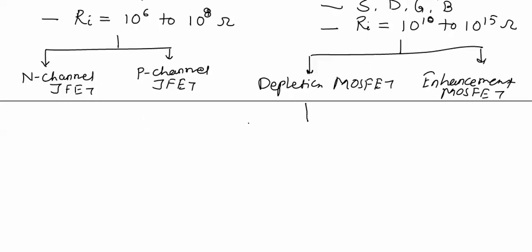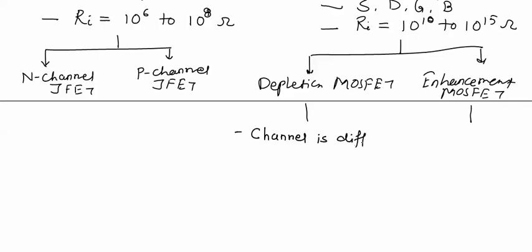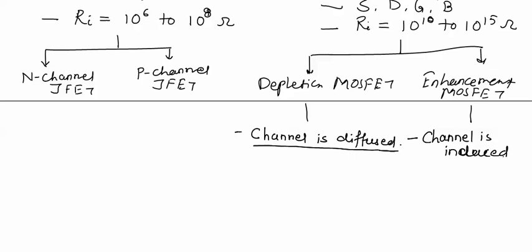The Depletion type MOSFET and Enhancement type MOSFET have a basic difference between them. In Depletion type MOSFET, the channel through which charge carriers flow is diffused during fabrication, meaning from the beginning the channel will be present. While in Enhancement type MOSFET, the channel will be induced during operation — only if proper biasing is given will the channel be induced.